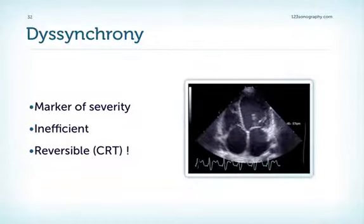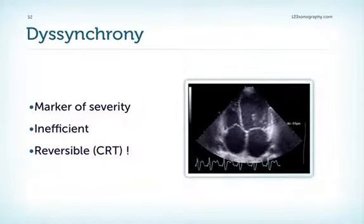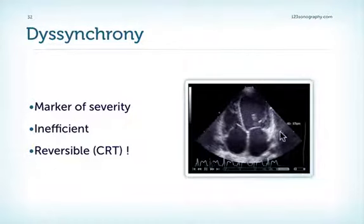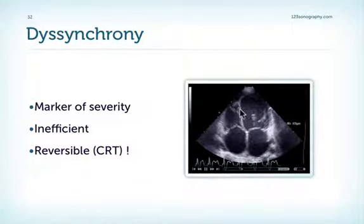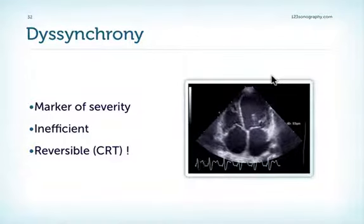Dyssynchrony is usually caused by left bundle branch block, which is fairly frequent in patients with dilated cardiomyopathy. The width of the QRS complex correlates with left ventricular function — the poorer the LV function, the wider the QRS complex and the more dyssynchrony. In other words, dyssynchrony is a marker of severity of disease. Dyssynchrony is a very inefficient way of contracting — you can see a biphasic contraction of the septum with different parts of the myocardium contracting at different time points, which you can appreciate in the 2D image without any fancy measurements. We will spend more time on dyssynchrony when discussing echocardiography's role in selecting and following these patients.